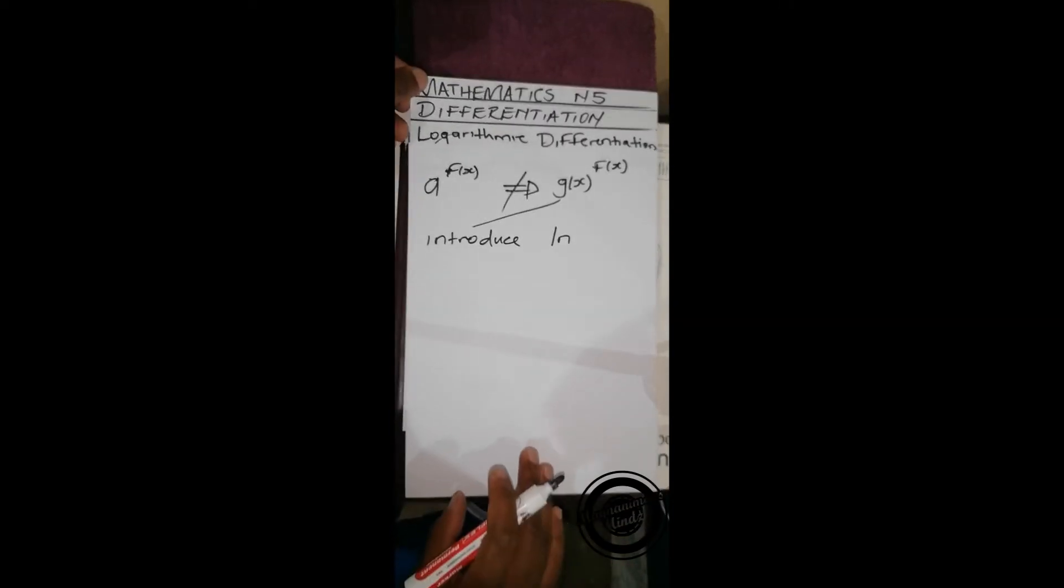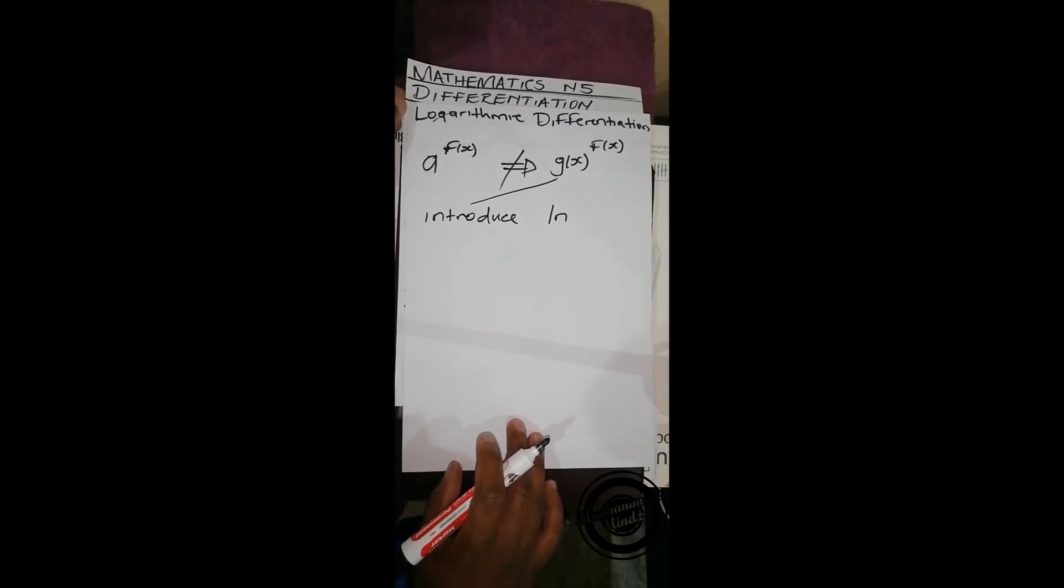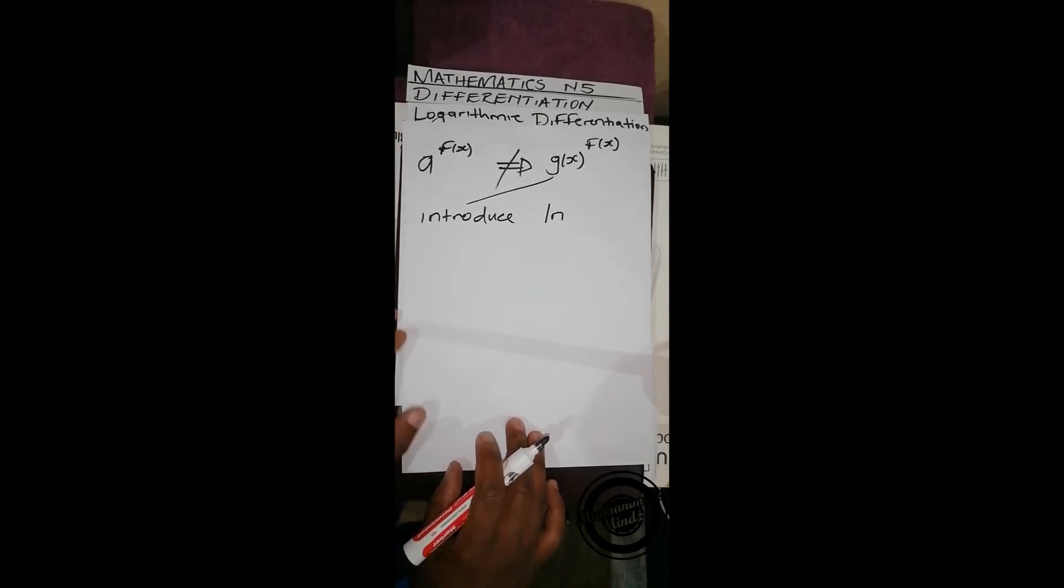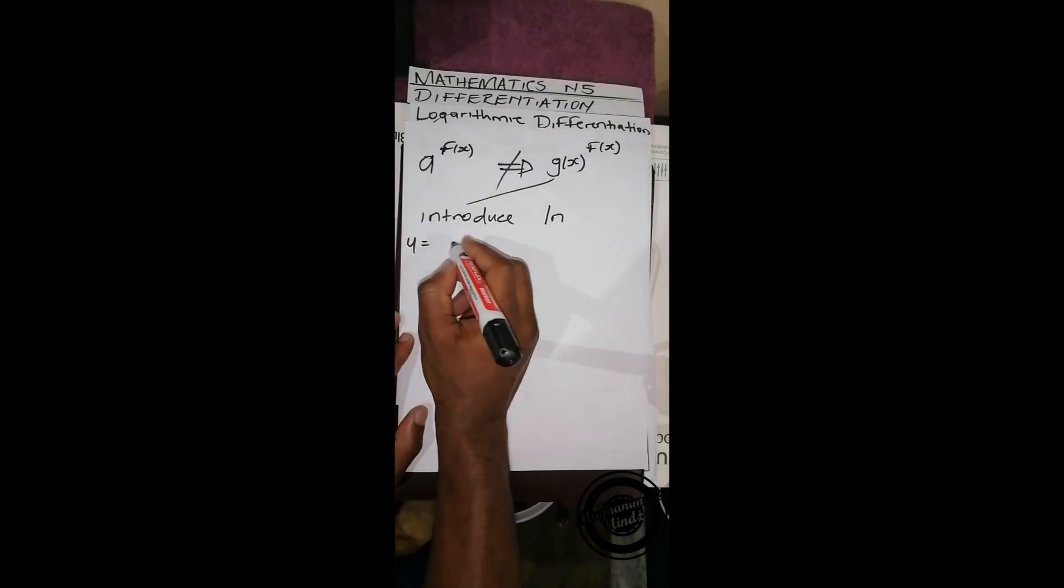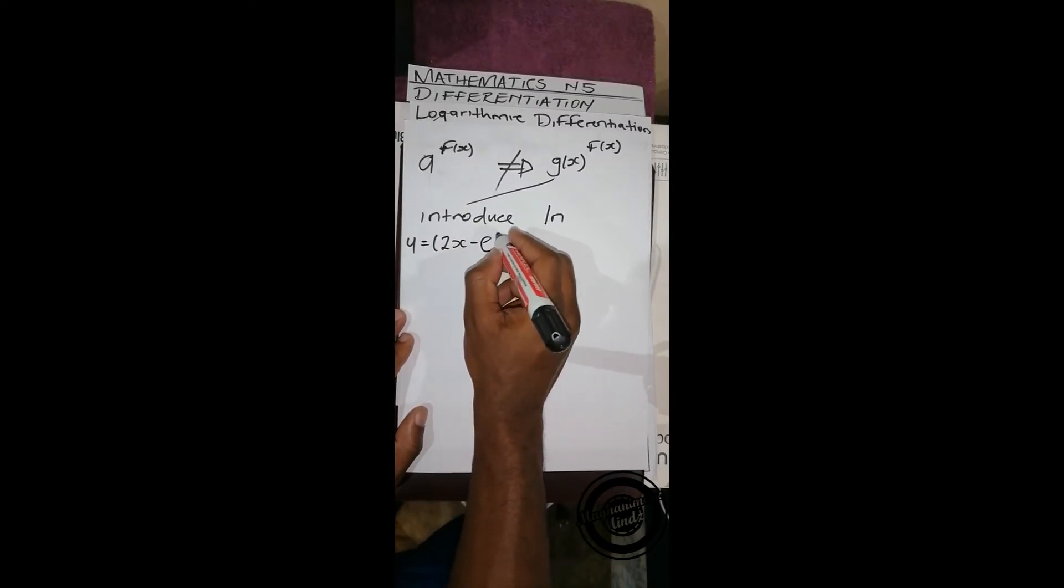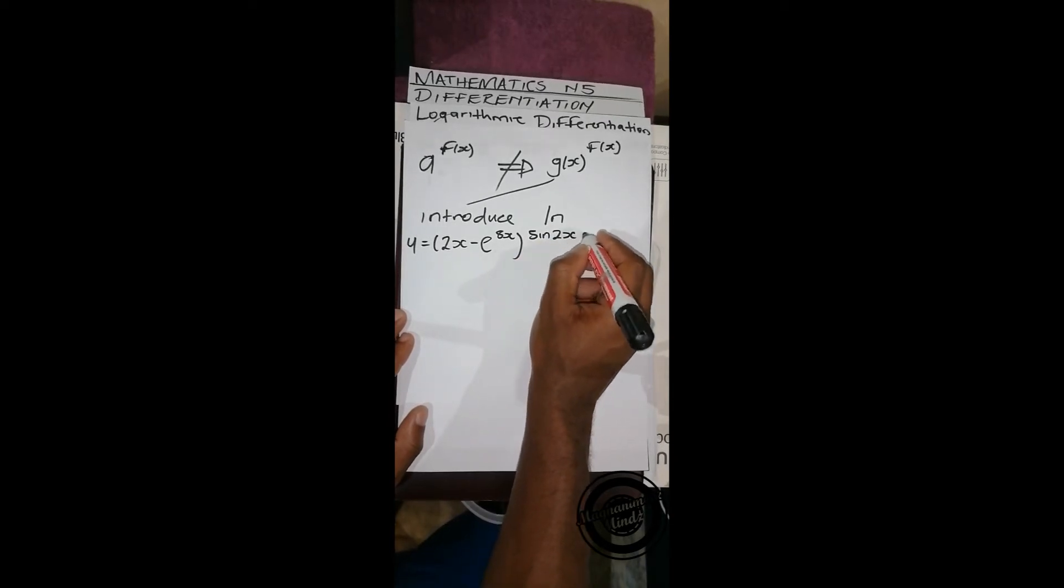I'll make use of a past equation from a past exam paper, whereby we're given y equals (2x - e^(8x))^(sin 2x).